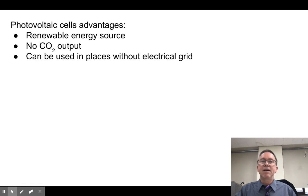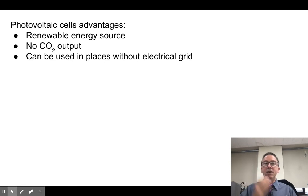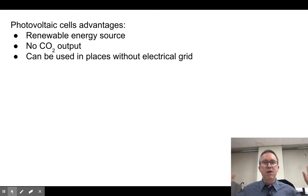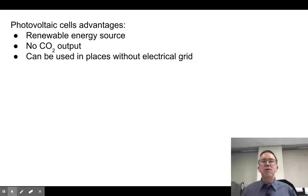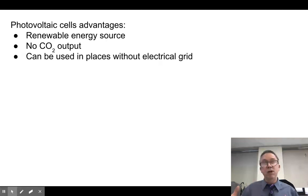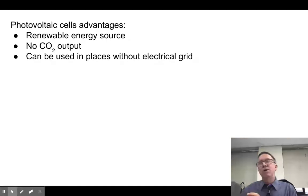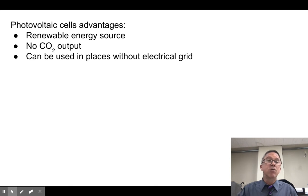Photovoltaic cells are now being deployed as a way of producing municipal power. The advantages: it's renewable energy — you're never going to run out of sunlight. There's no CO2 output. And the nice thing about photovoltaics specifically is that you can use them in places without an electrical grid, like sub-Saharan Africa or parts of Central Asia that don't have much in the way of electricity.